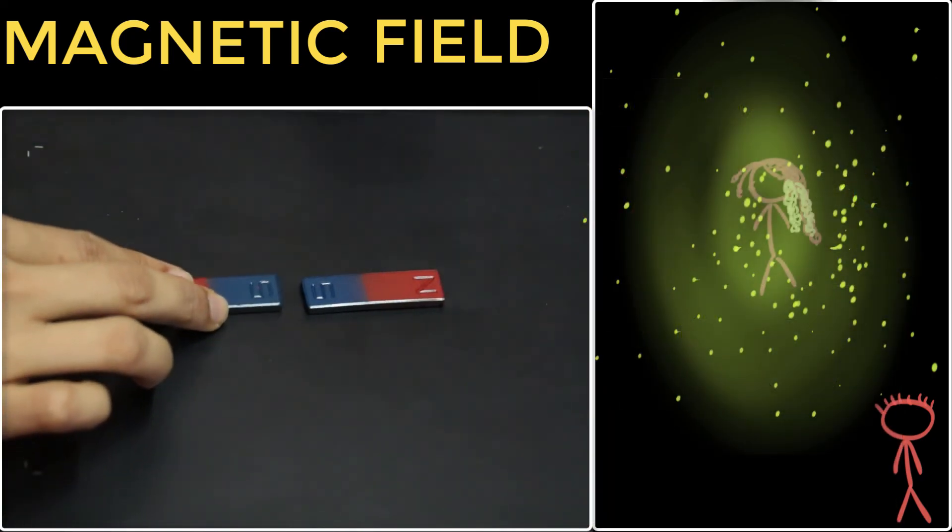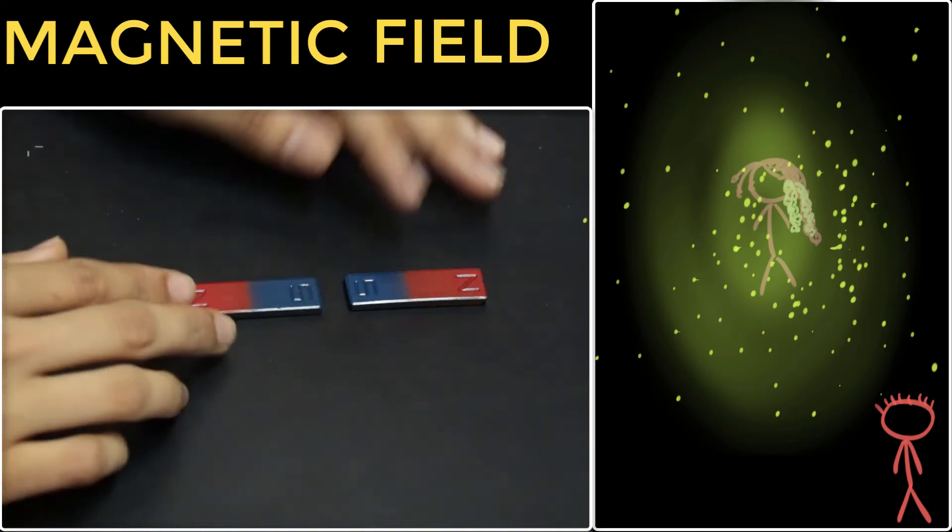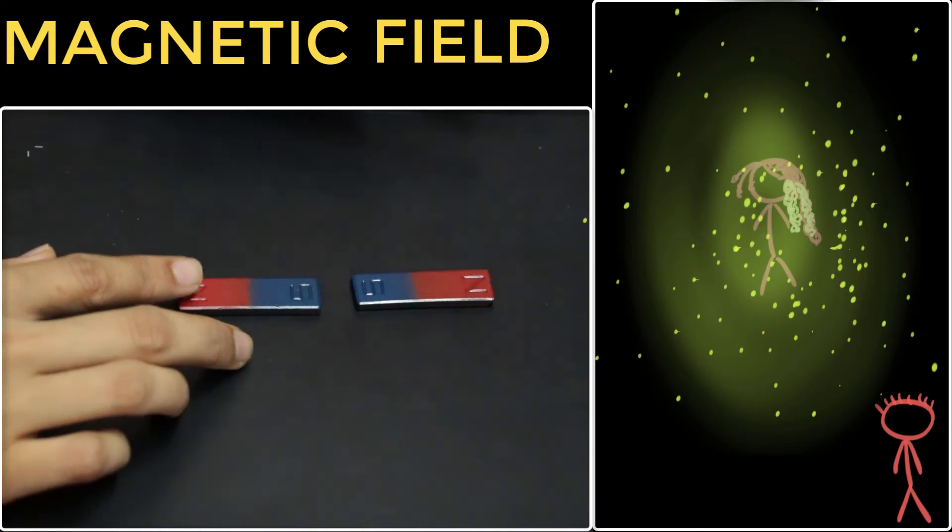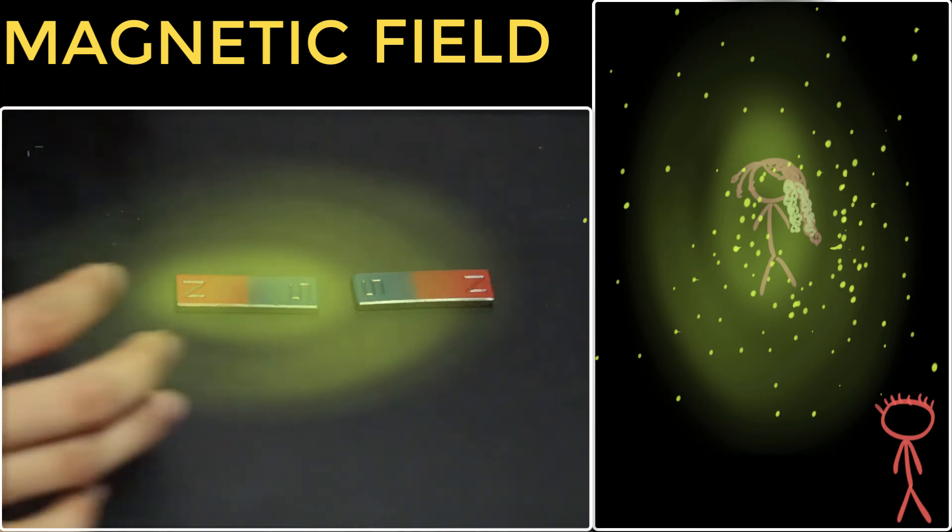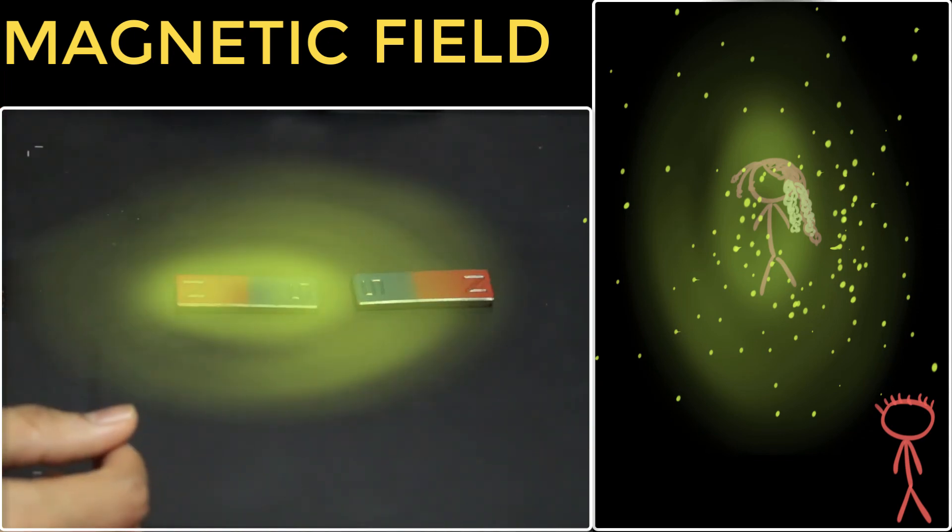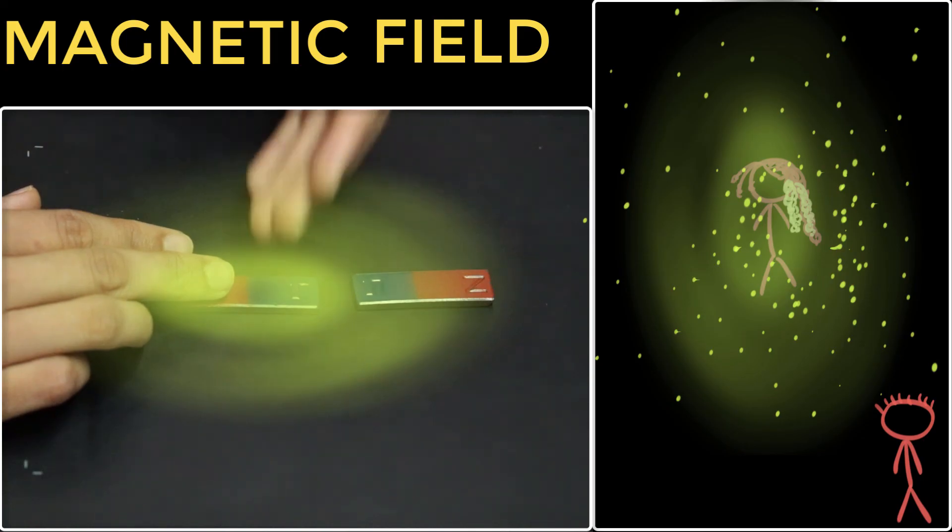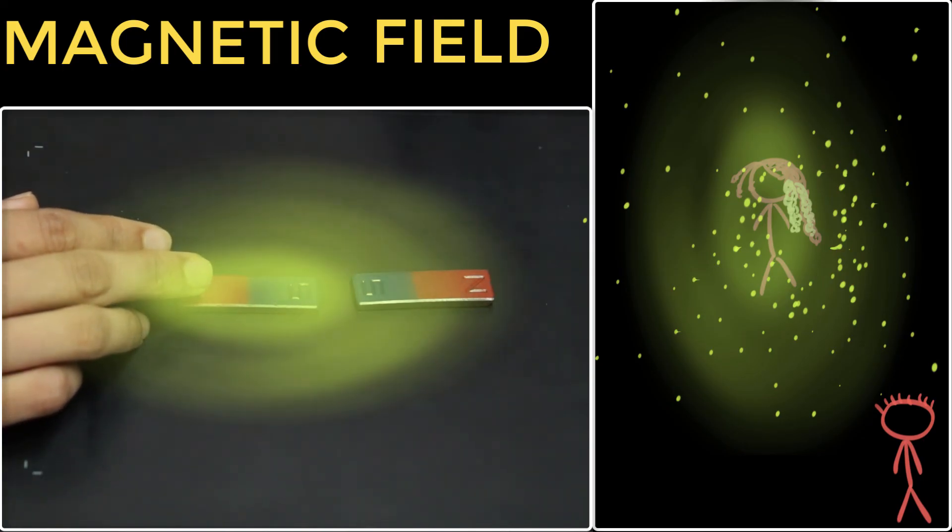So to summarize, how do magnets push and pull each other over a distance? Well, they don't directly. A magnet will create a magnetic field around it, making its presence felt far away. And when any other magnet comes in contact with that field, it automatically experiences a force.